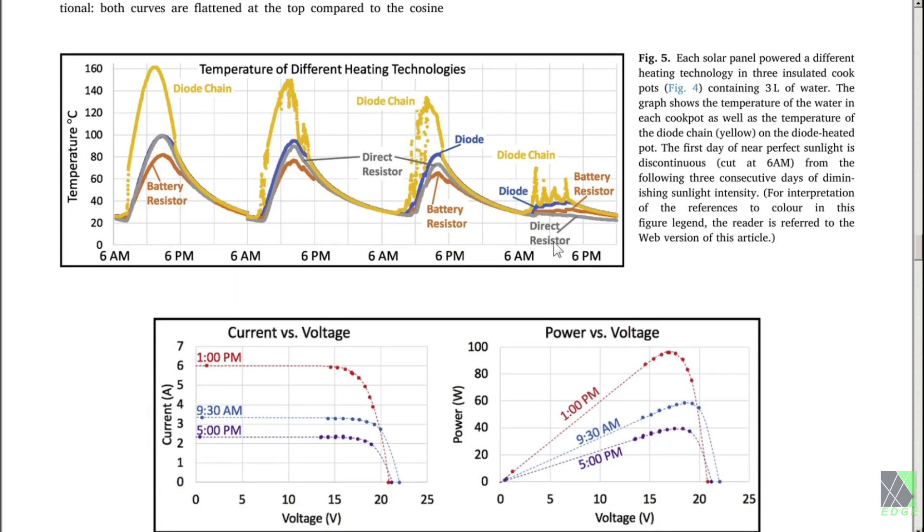This chart here is the take-home message. As you can see here, if we look at watt-hours and heat, watt-hours and heat are pretty much the same thing. Instead of expressing the heat performance as watt-hours, these guys are going to use temperature. And you can see that it isn't even close. The diode chain absolutely annihilates the battery and/or resistor combo or the directly attached heating element combo.